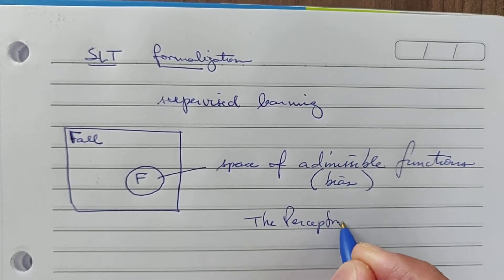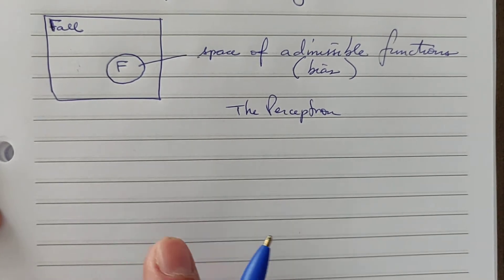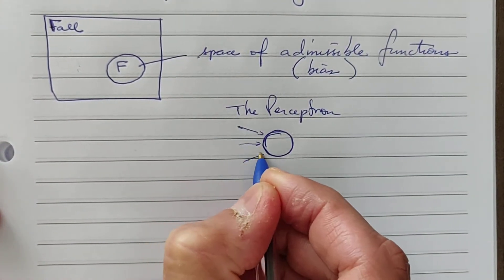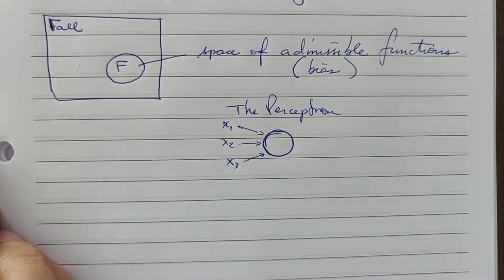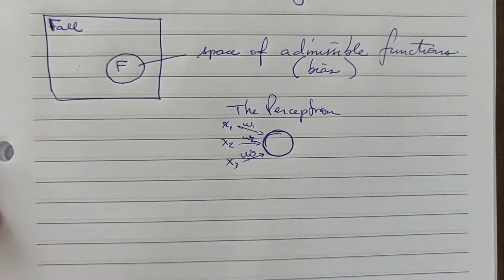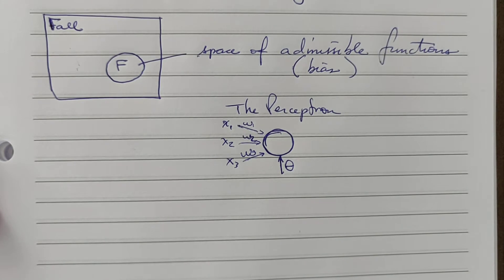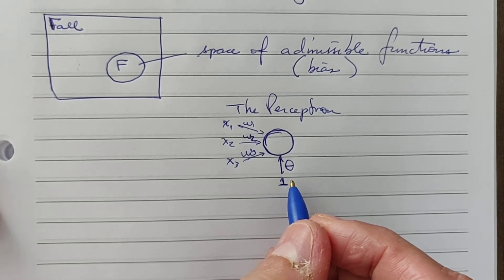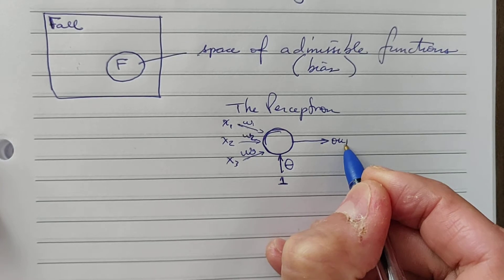If we take the perceptron, it will be capable of representing every possible linear function. It is given by a single neuron which receives some inputs, all multiplied by weights. Here I have some theta to change the interception point of this hyperplane that's going to be built inside the perceptron, and here we have some output.